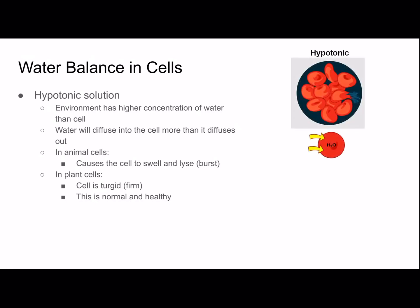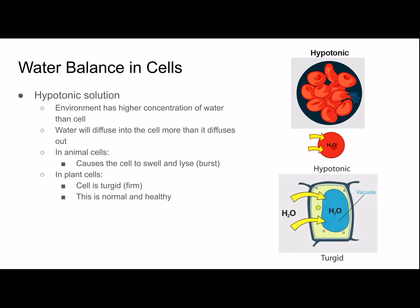You can see what an animal cell looks like in hypotonic solution and here is a plant cell. Because of diffusion the water goes from outside the cell to inside, causing it to burst for animal cells.